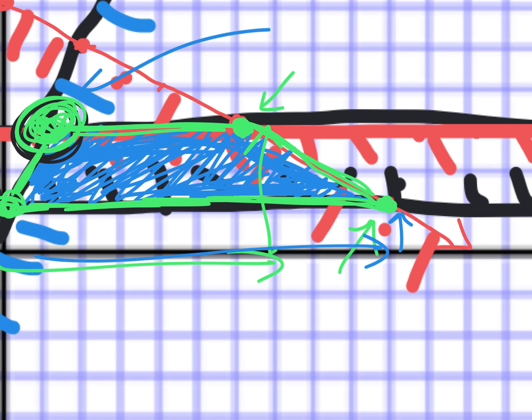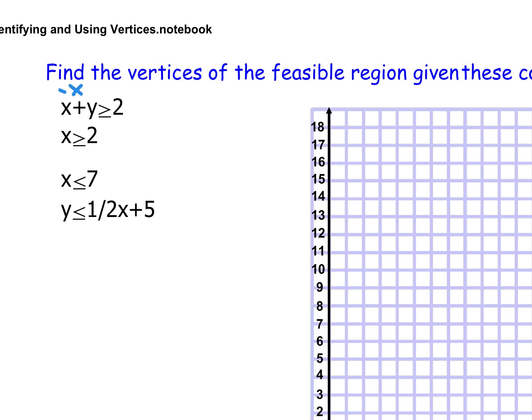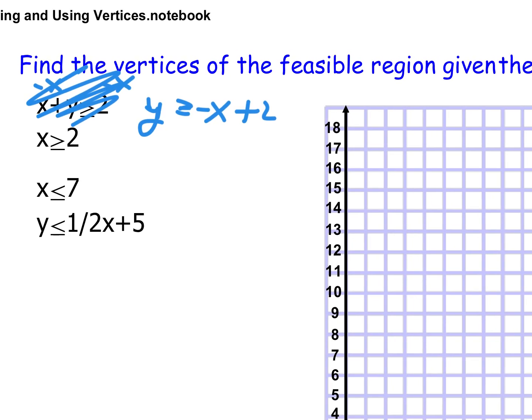You have what's called an optimization equation — that's what we're going to do last. For this next example I'd solve for y, take away x on both sides, and get y greater than or equal to negative x plus 2. So much easier to graph when you have them in y equals form. Graph them, find the shape, and the corners of that shape are called the feasible region vertices. Then you do the optimization equation.